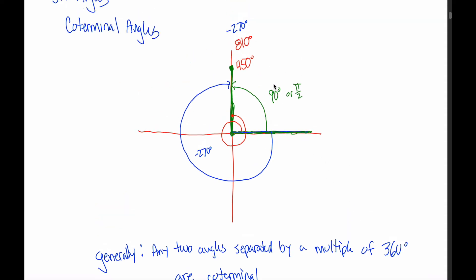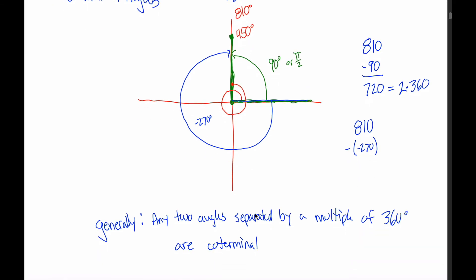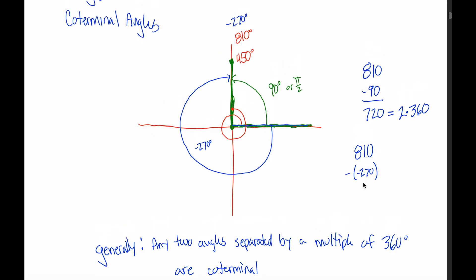The claim was that 810 and 90 were coterminal. The reason they're coterminal is because if I subtract the two of them to figure out how much they're separated by, I get 720. And 720 is a whole number multiple — two in this case — of 360. So the reason 810 and 90 are coterminal is that the difference between them is a multiple of 360. Note that 810 and negative 270 are also coterminal because 810 minus negative 270 — subtracting a negative is like adding — gives me 1080, which is 3 times 360.